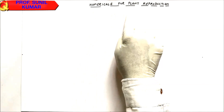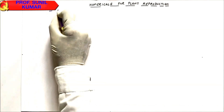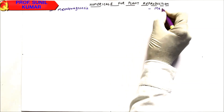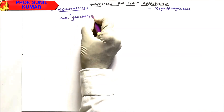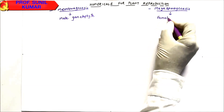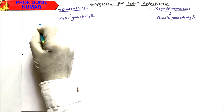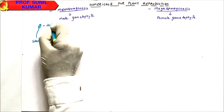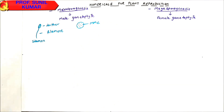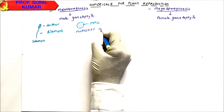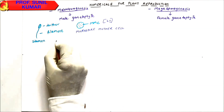Let's understand numericals for plant reproduction that come in the NEET exam. We have two concepts: microsporogenesis, which is the development of the male gametophyte, and megasporogenesis, which is the development of the female gametophyte. We have an anther — part of the stamen — and inside the anther we have MMC, the micro spore mother cell, which is diploid in nature.